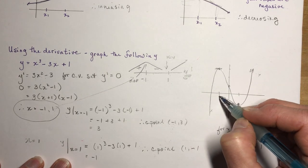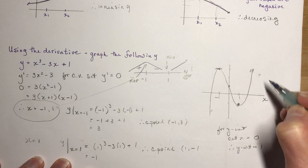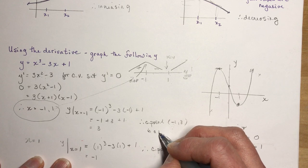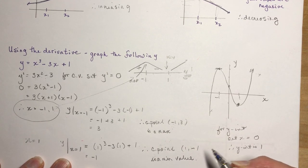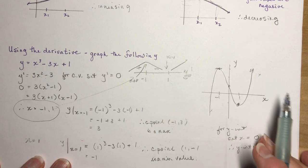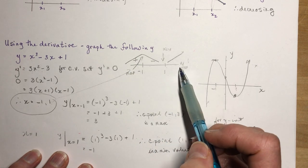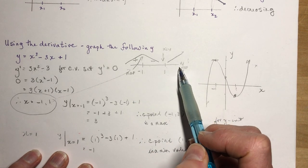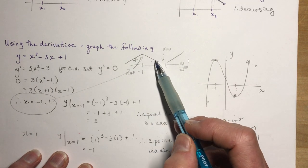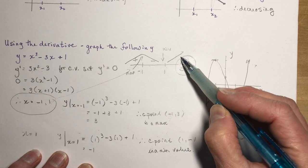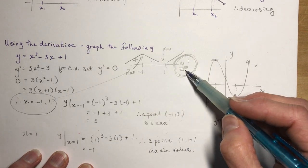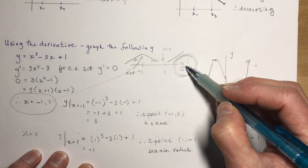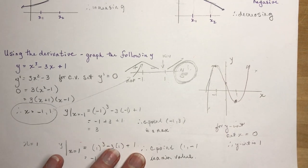So (-1, 3) is a maximum and (1, -1) is a minimum — these are local max and min on the interval. The first derivative test checks the derivative to the left and right of critical values to see if slope is positive or negative. Remember: use y' when checking the slope, not the original function.